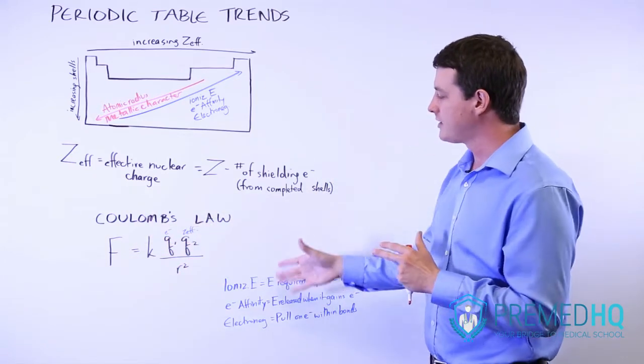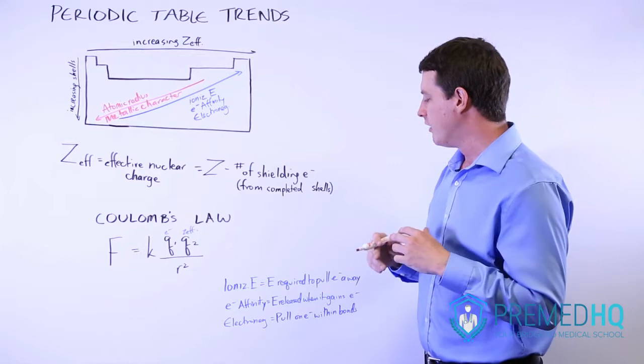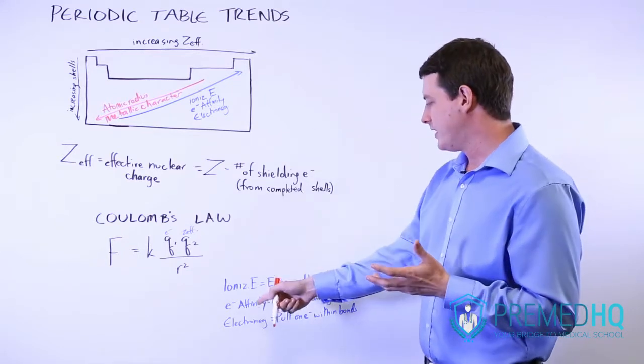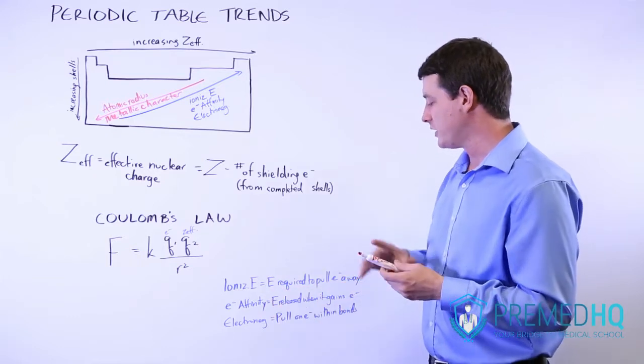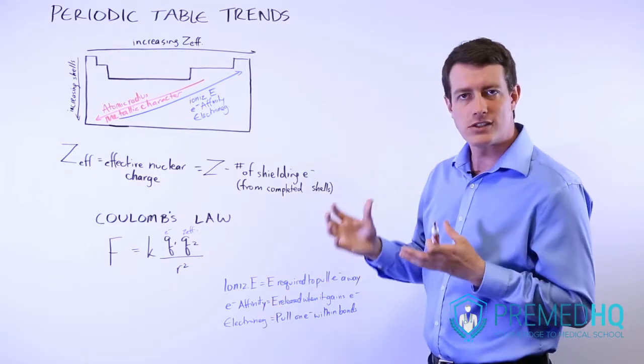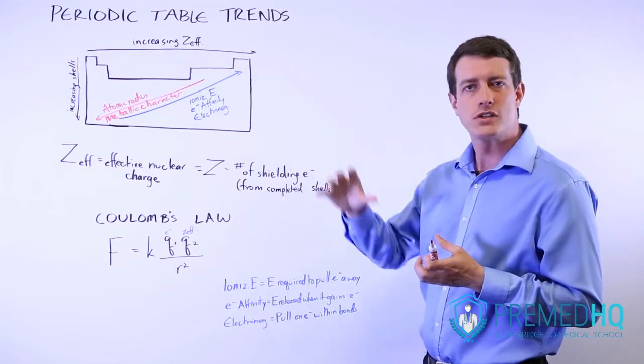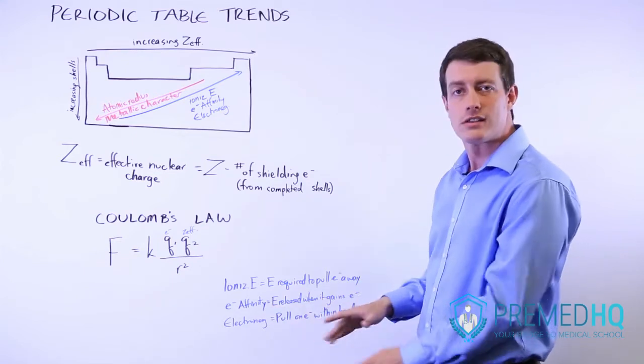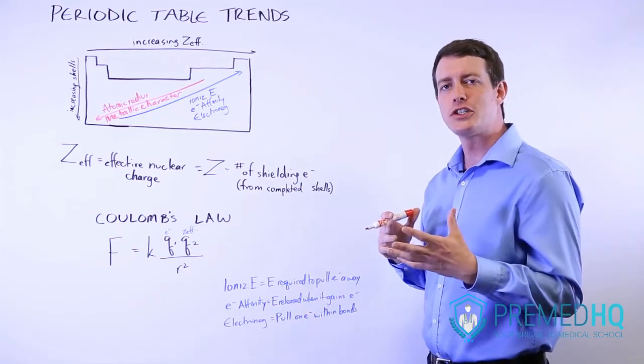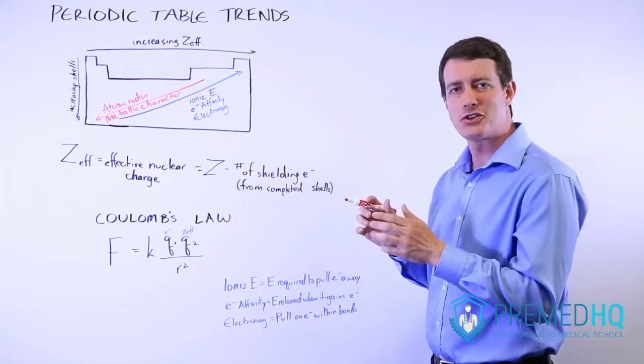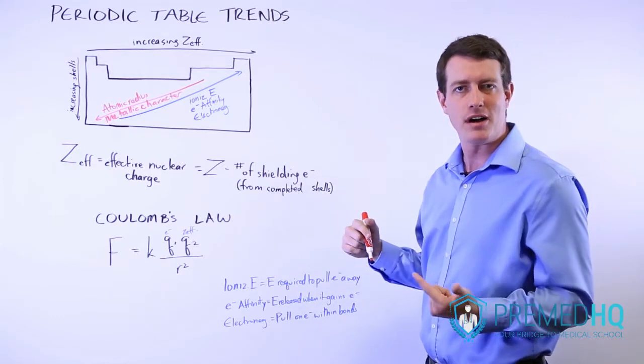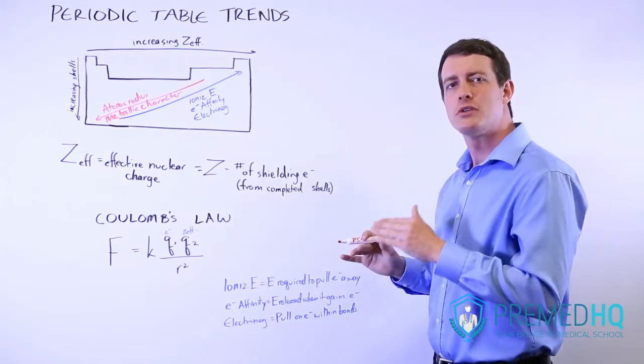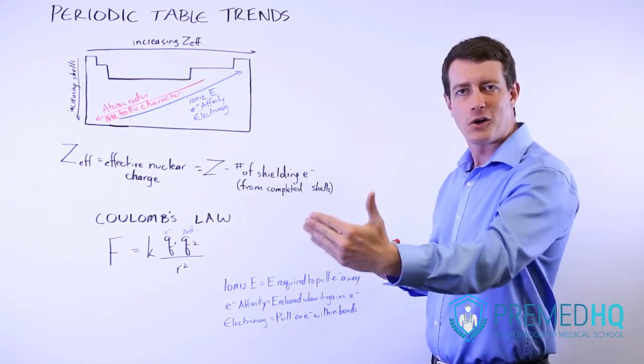And when we realize that ionization energy is essentially the energy required to pull an electron away from that atom, that electron affinity is the energy that's released when it gains an electron, and so in a way it's sort of a measurement of the force that it exerts on surrounding electrons. And electronegativity, which is the indication of how much an atom pulls on an electron that it's sharing in a covalent bond, all of these are basically asking about what is the force between the nucleus and those outer layer electrons.